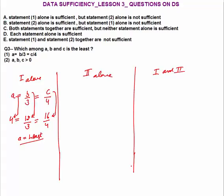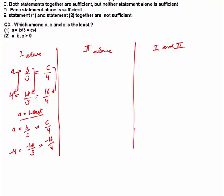Taking negative values: a = minus 4, b = minus 12, c = minus 16. All still satisfy a = b/3 = c/4. Now which is least? C (minus 16) is the least. So with positive values a is least, with negative values c is least — we're not getting a unique answer. Statement 1 alone is not sufficient.